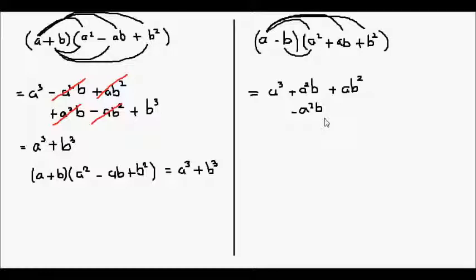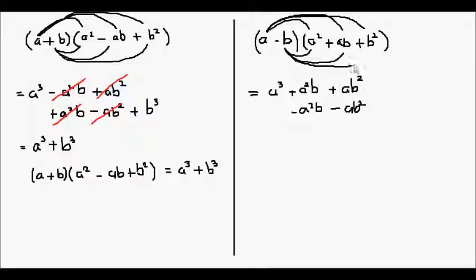I like to keep my variables in alphabetical order, which is why I put the a in front of the b. b times ab will give us ab squared. And minus b times b squared will give us negative b cubed.